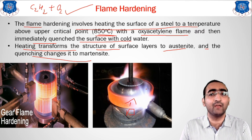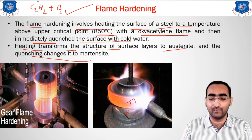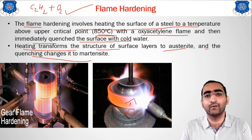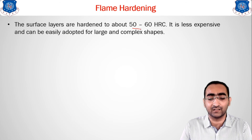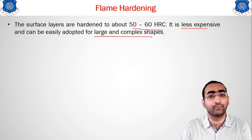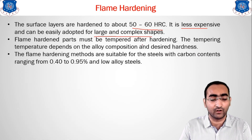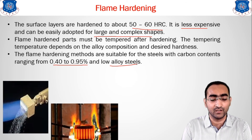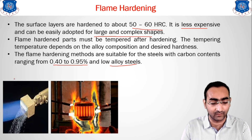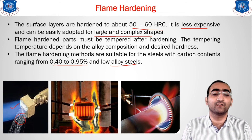In flame hardening, two nozzles are used — one for heating and one for cooling. Hardness of 50–60 HRC is achieved. It is a less expensive method, and large and complex shapes can be easily hardened. It is suitable for steels with 0.40 to 0.95% carbon in low alloy steels. Photographs show the heating and cooling nozzles used in the process.